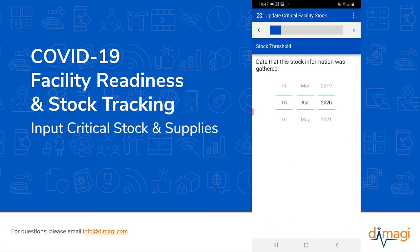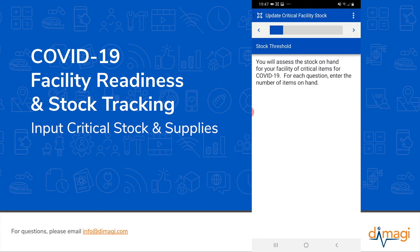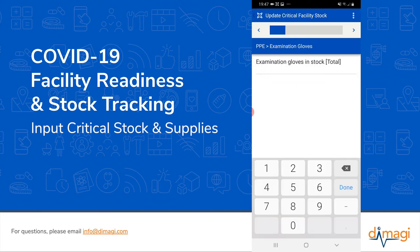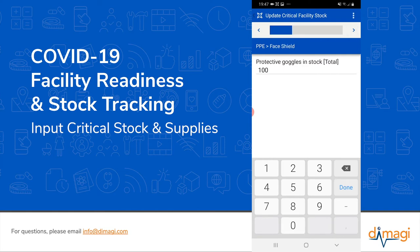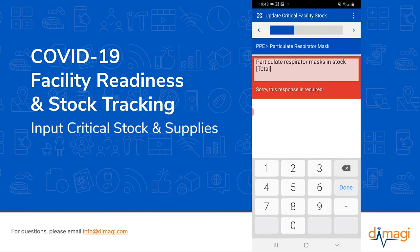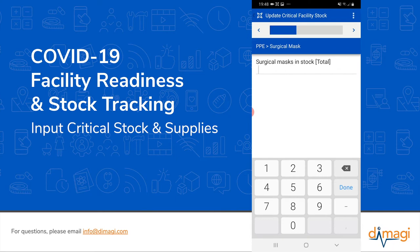We can add the stock take date in case that wasn't today — we're going to say the stock take date was two days ago. I'm going to go through this quickly just to show you the content that has been built in. This content is intended to be adaptable to organizations involved in COVID-19 response. We have 100 examination gloves in stock, 100 surgical gloves, 100 goggles, 100 face shields. We're unsure about respiratory masks so we'll say zero. We have 100 surgical masks left in stock.